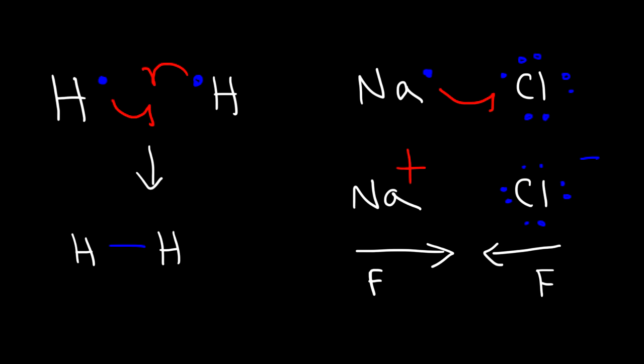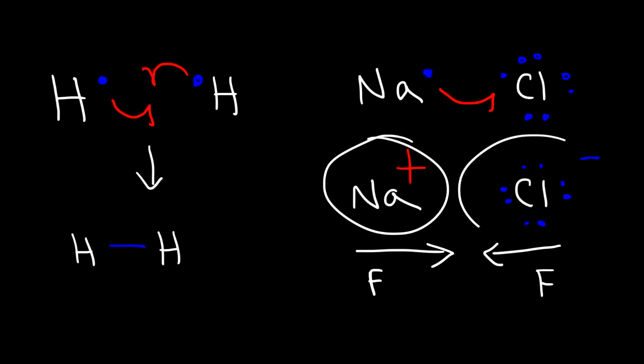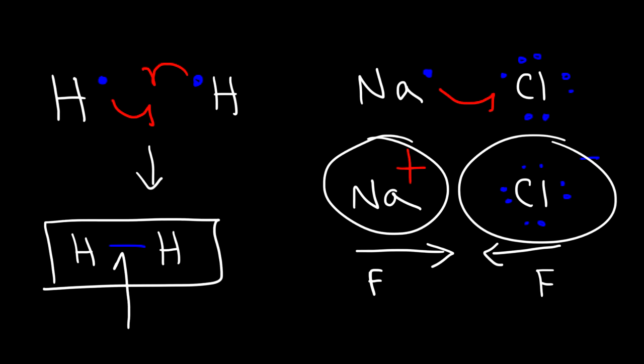Opposite charges attract, so there is an electrostatic force that pulls them together, creating the ionic bond. Ionic bonds are formed through the transfer of electrons and are based on electrostatic forces pulling positive and negative ions together. In a covalent bond, electrons are shared between two atoms. Now that we know what a covalent bond is, we can talk about polar covalent bonds and non-polar covalent bonds.